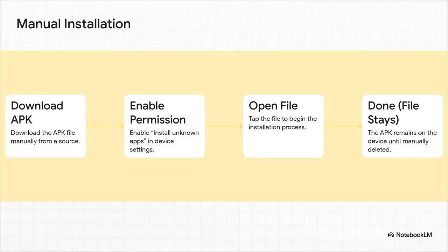But there is another way — it's often called sideloading. This is where you download the APK file directly from a website or another source. To do this, you have to go into your settings and give your phone permission to install unknown apps. Then you find the file, tap on it, and install it. Unlike the Play Store, the APK file stays on your phone until you delete it. It's useful, but you have to be way more careful about security.